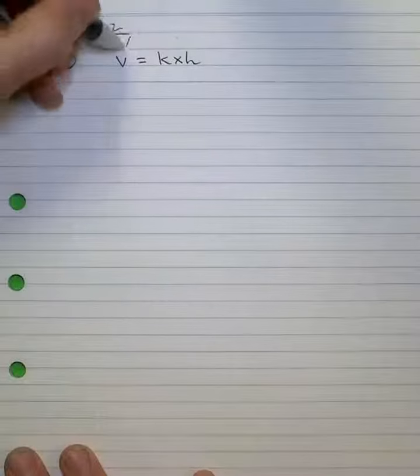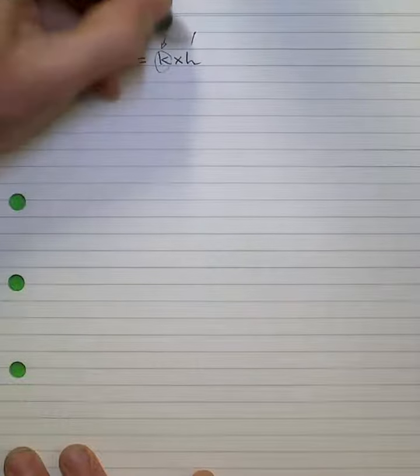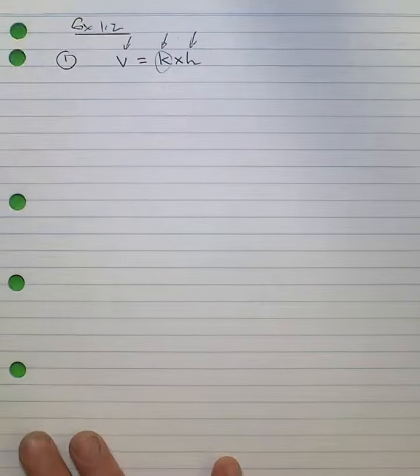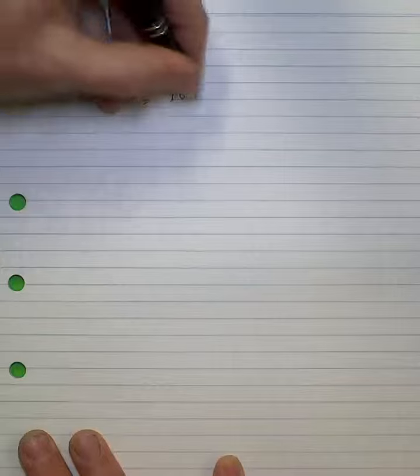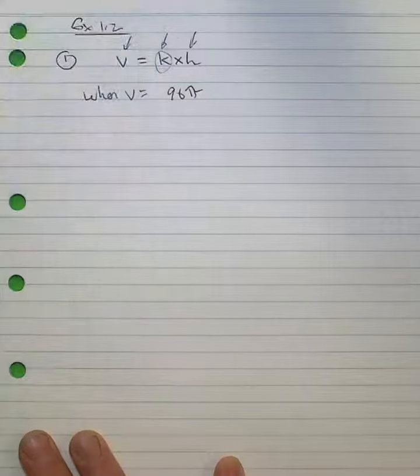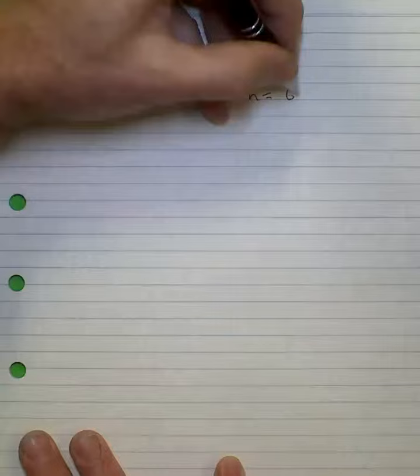So we write that as volume is equal to a constant, which I'm calling k, times the height. Now when the volume is equal to 96π, the height is equal to 6 centimeters.